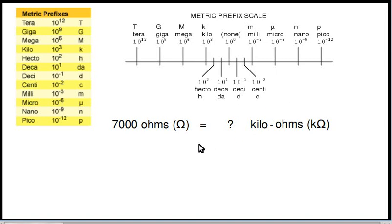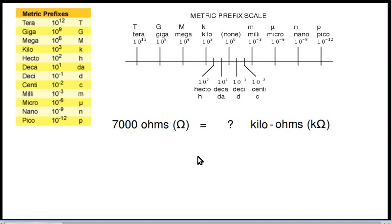Let's look at some examples of how we convert metric prefixes. For example, here we have 7,000 ohms — how many kilohms is that? It really doesn't matter what unit we're measuring in; it's the metric prefix we're looking at. You can use these metric prefixes with almost anything, like kilo-inches or mega-gallons. It's not the units that affect how we convert, it's just the metric prefixes. And we do it by moving the decimal point.